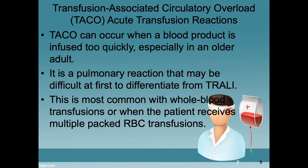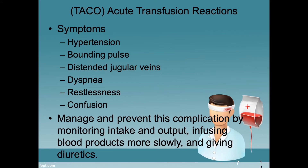TACO, or transfusion-associated circulatory overload, occurs when a blood product is infused too quickly, especially in an older adult. It is a pulmonary reaction that may be difficult at first to distinguish from TRALI. This is most common with whole blood transfusion or if the patient receives multiple packed RBC transfusions. Symptoms of TACO include hypertension, a bounding pulse, distended jugular veins, dyspnea, restlessness, and confusion. You should manage and prevent this complication by monitoring intake and output, infusing blood products more slowly, and giving diuretics.